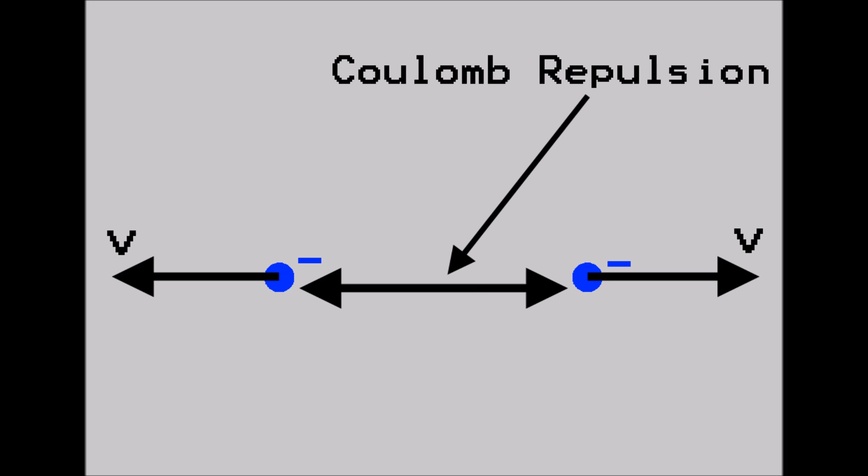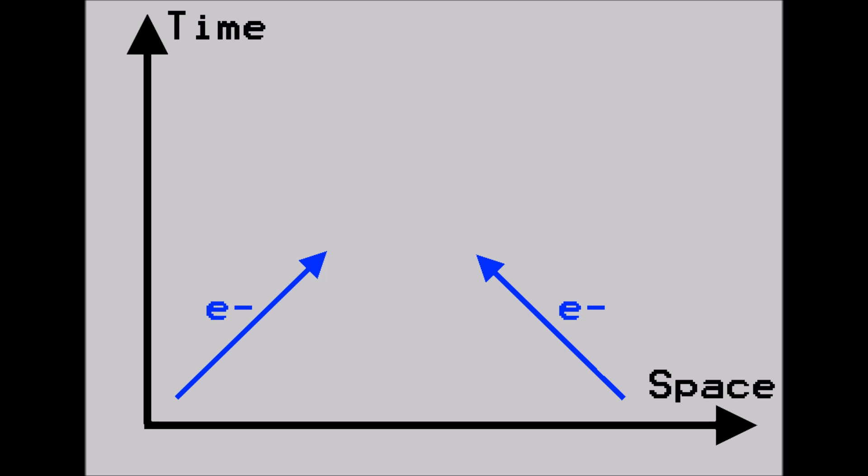We know that since the two electrons are both negatively charged, and like charges repel, that the electrons will eventually be pushed away from each other by an electromagnetic force. So we can represent this repulsive motion by pointing the lines away from each other. But wait! What happened in the middle?